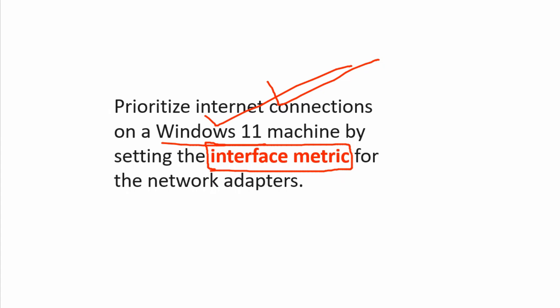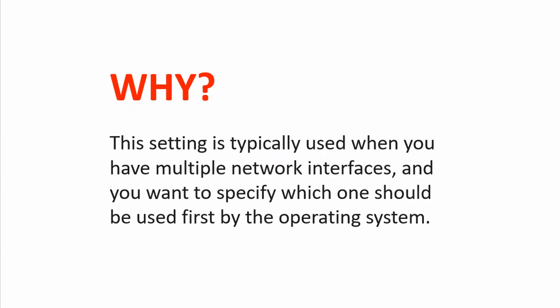The steps may differ across versions. Now, the big question is why — why would you even want to do it in the first place? Well, the setting is typically used when you have multiple network interfaces and you want to specify which one should be used first by the operating system. Simply put, it tells Windows which network adapter to prefer when there are multiple paths to a network destination.